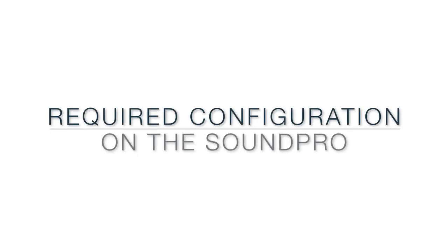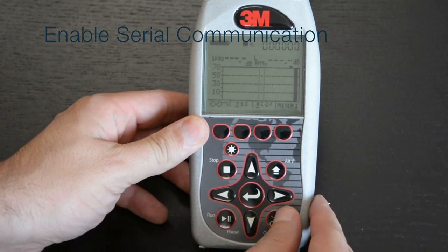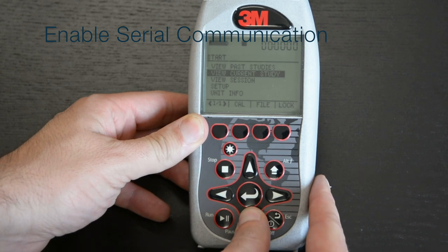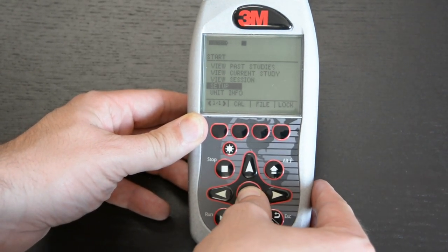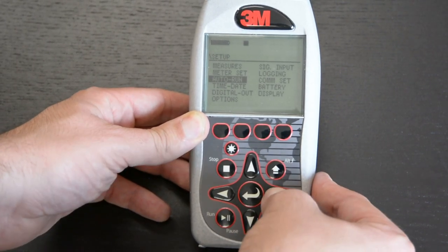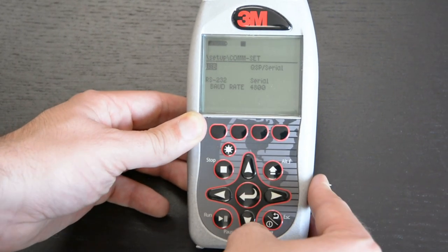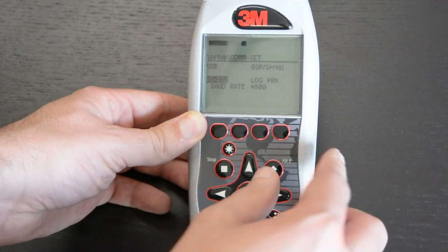In order to begin transmitting data from the SoundPro to the FX-30, we'll first ensure that the proper logging options are set. We'll do that by pressing the Escape button, then selecting Setup from the menu screen, then navigating to Comset, selecting that, then changing the RS-232 field from Serial to Log PRN, and then ensuring that the bond rate is set to 4800.